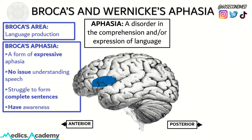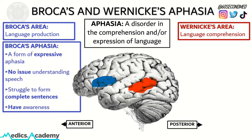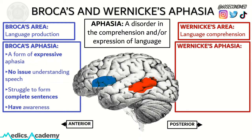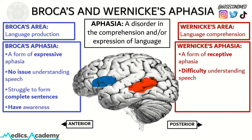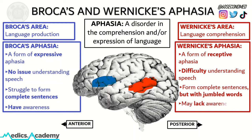Wernicke's area is in the temporal lobe and is responsible for language comprehension. Wernicke's aphasia is a form of receptive aphasia where there's difficulty in understanding speech. They also form complete, grammatically sound sentences but with jumbled up words that can be difficult to understand, and they tend to lack awareness that they even have a language difficulty.